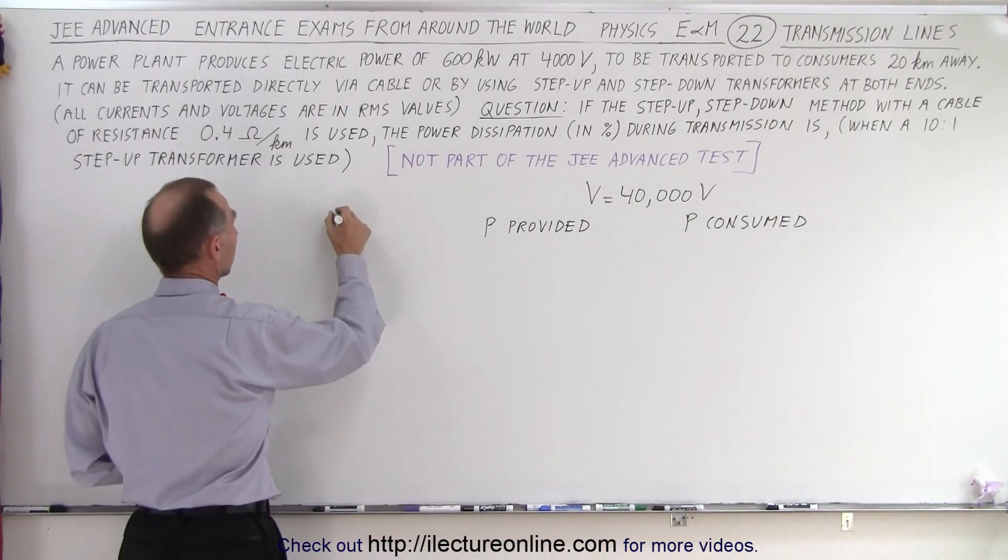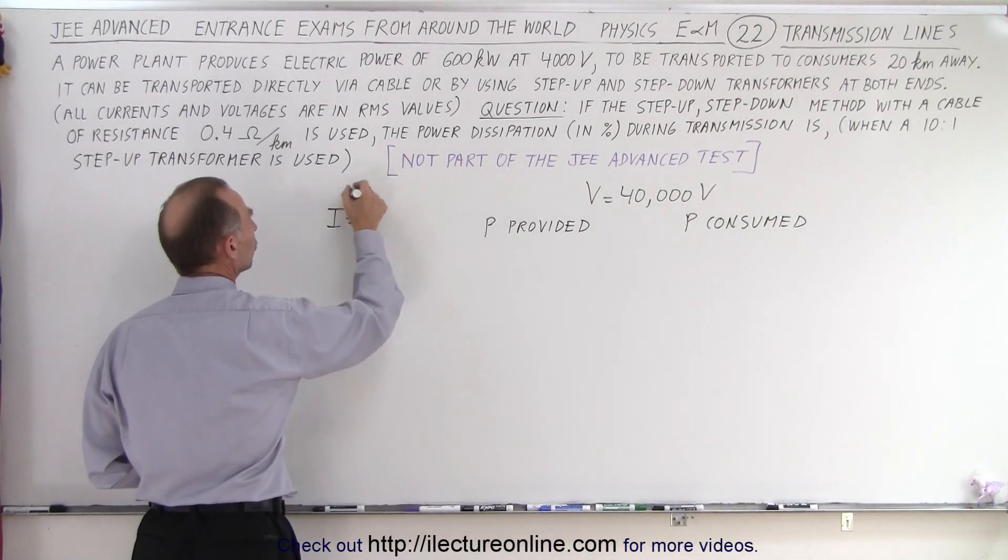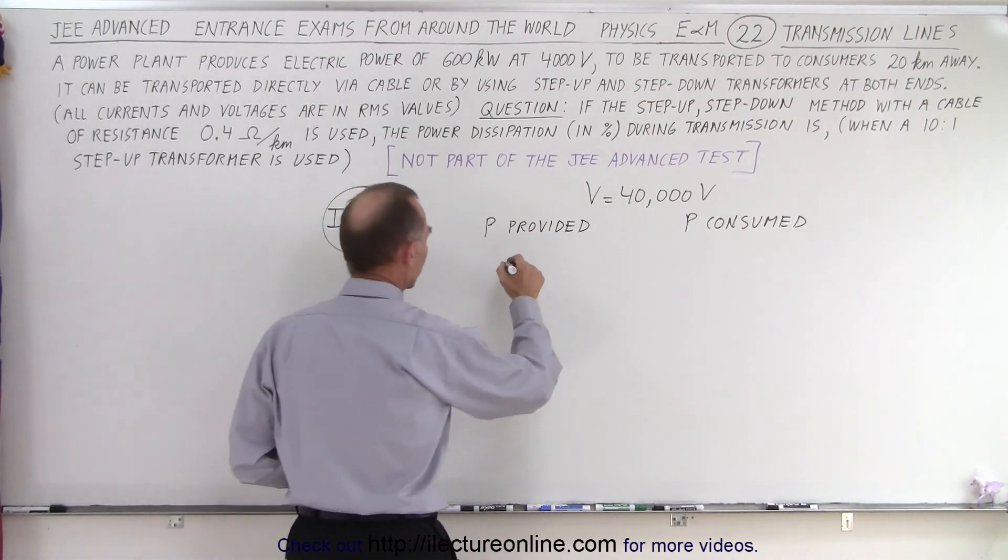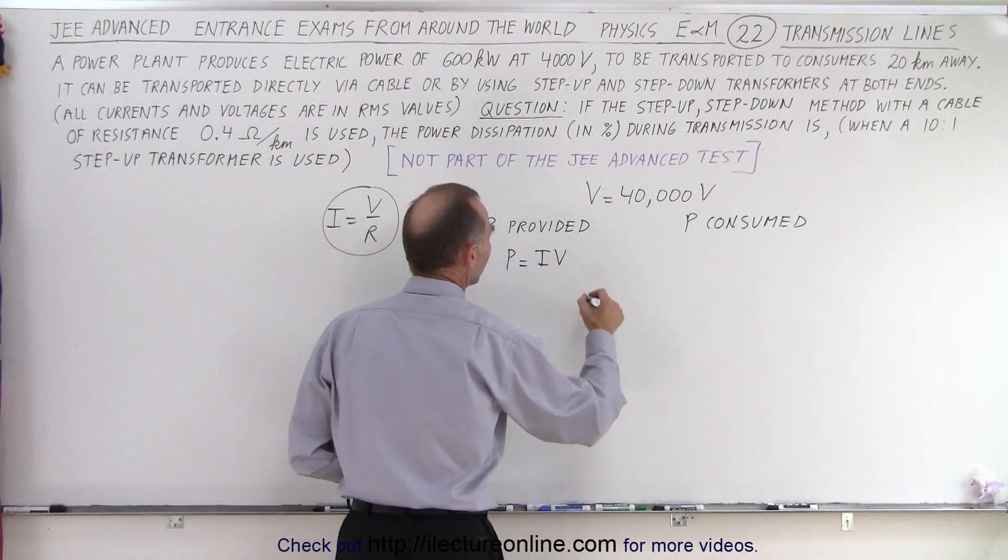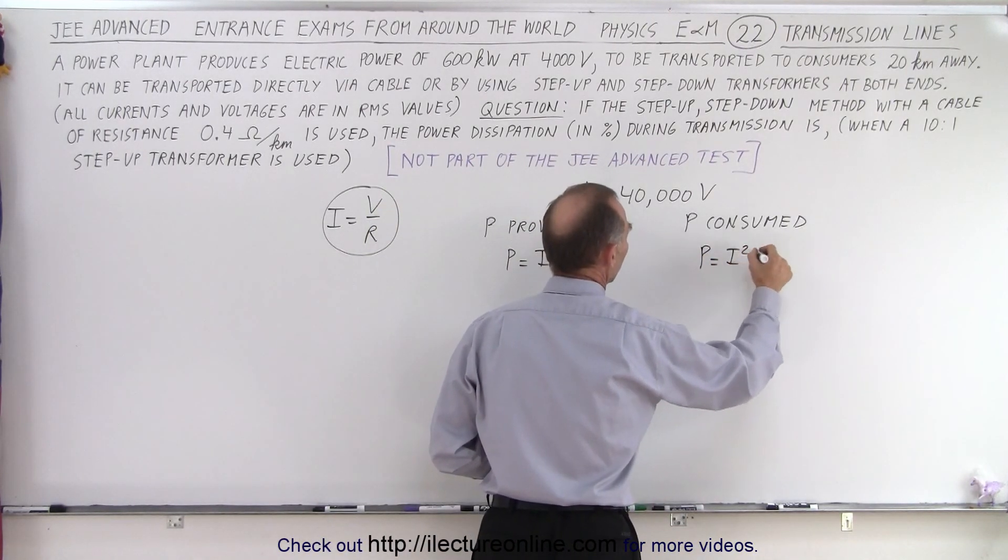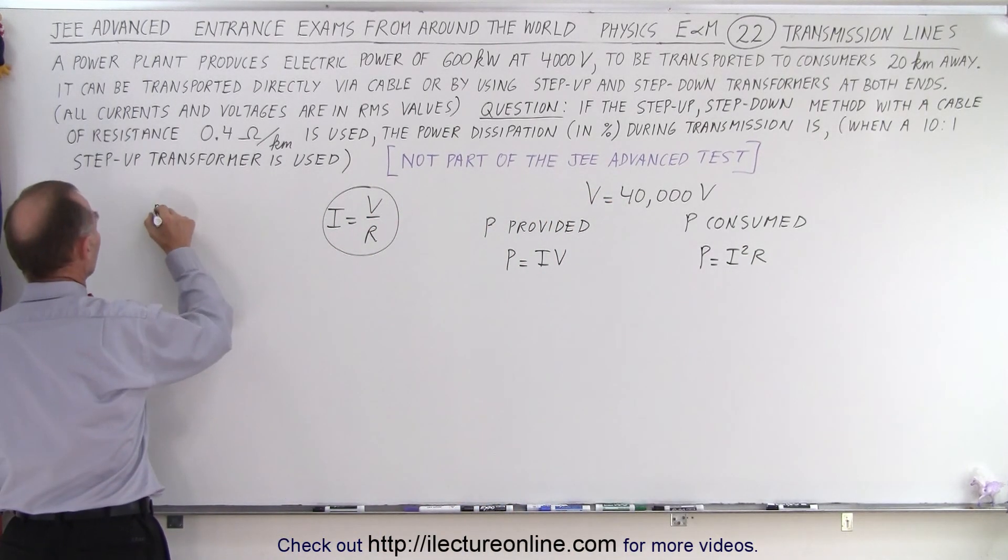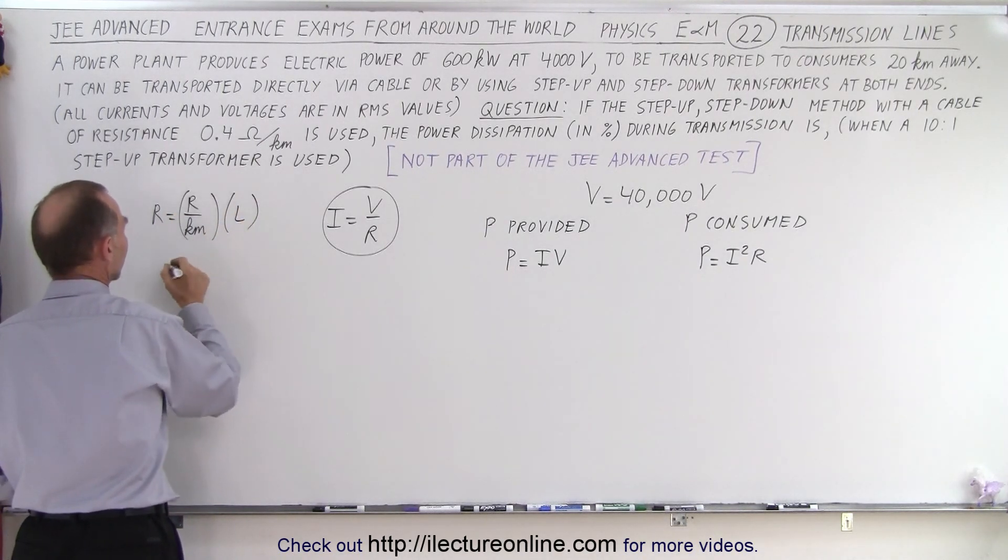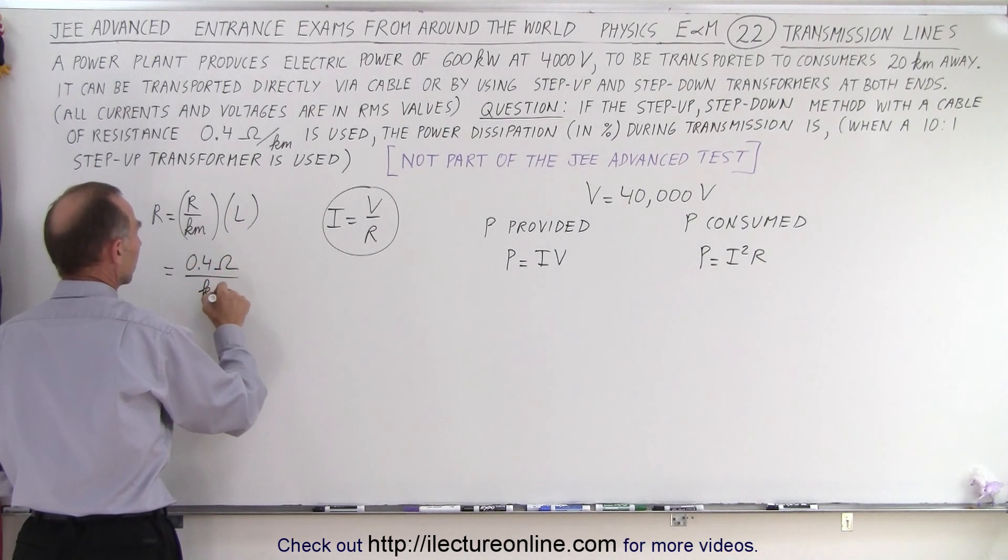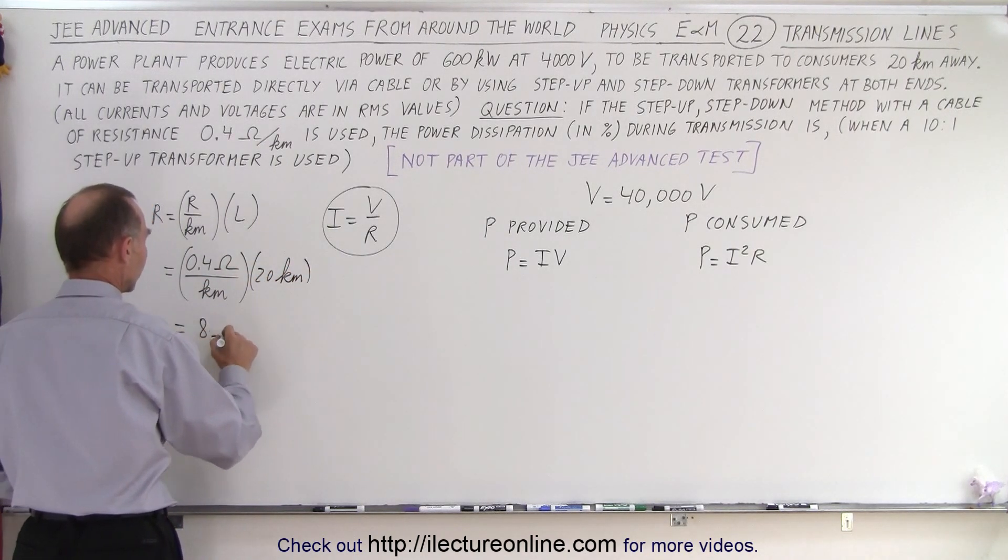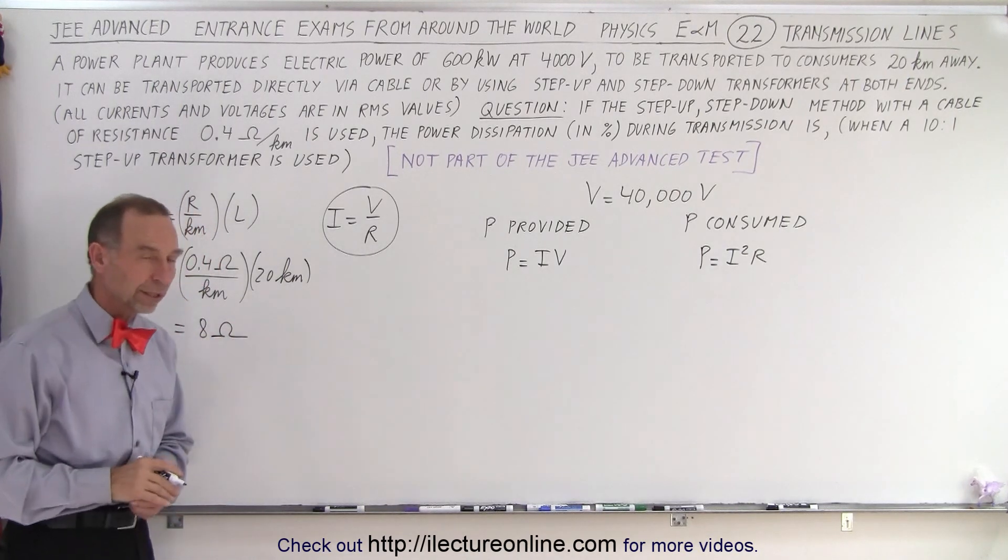And of course, we have Ohm's law, I equals V over R, which when appropriately substituted in one of those two equations, you can get the other equation. Power provided is equal to the current times the voltage, and power consumed is equal to I squared R. And then of course, we need to find the resistance on the line, and the resistance is equal to the resistance per kilometer times the length of the line. So in this case, that would be 0.4 ohms per kilometer, and the length of the line is 20 kilometers, which means that we have a resistance of 8 ohms across the 20 kilometers on the cable.